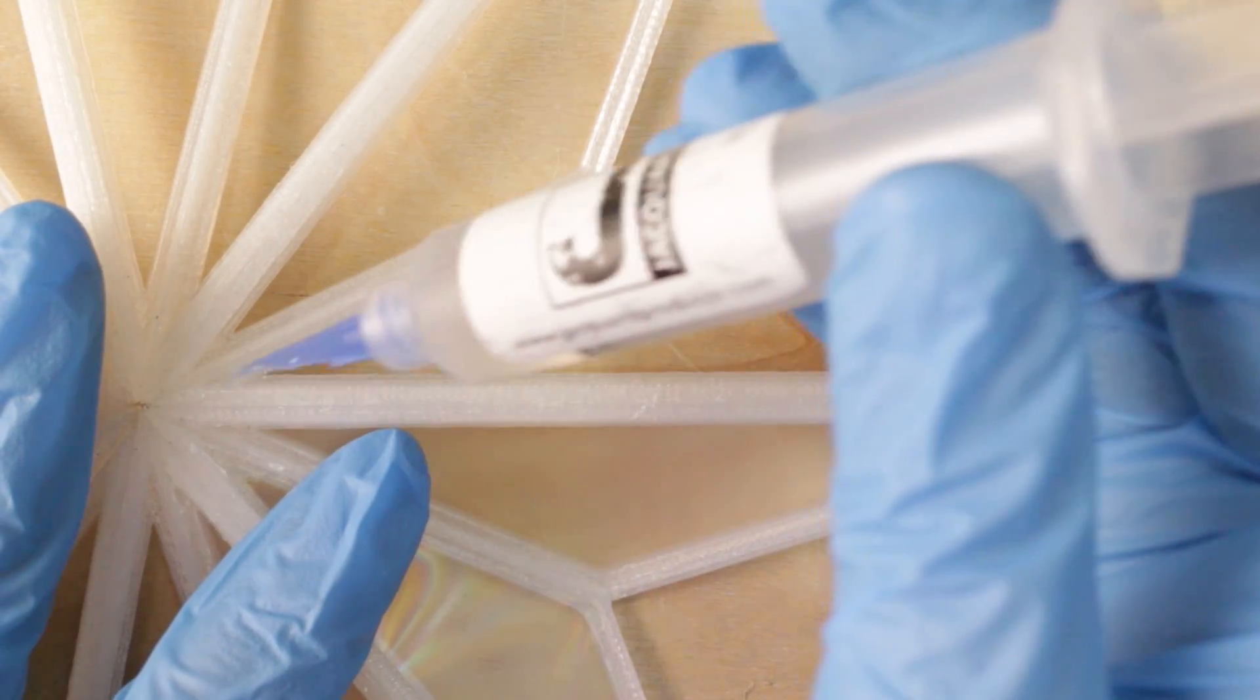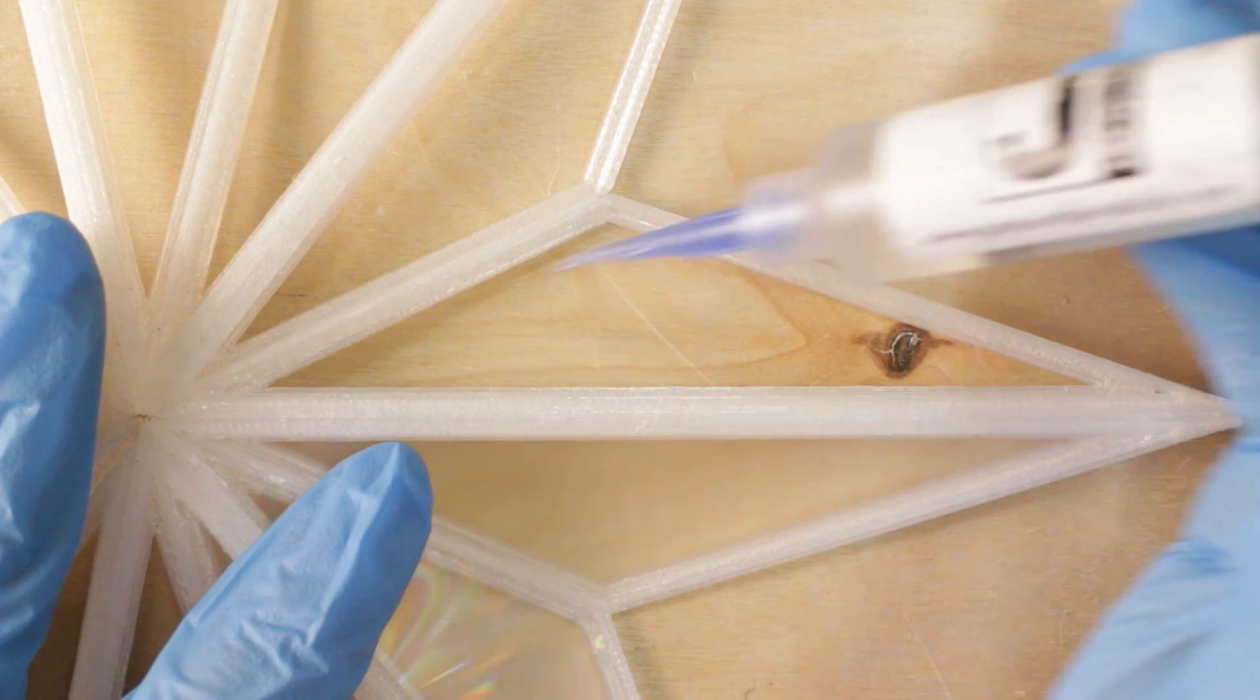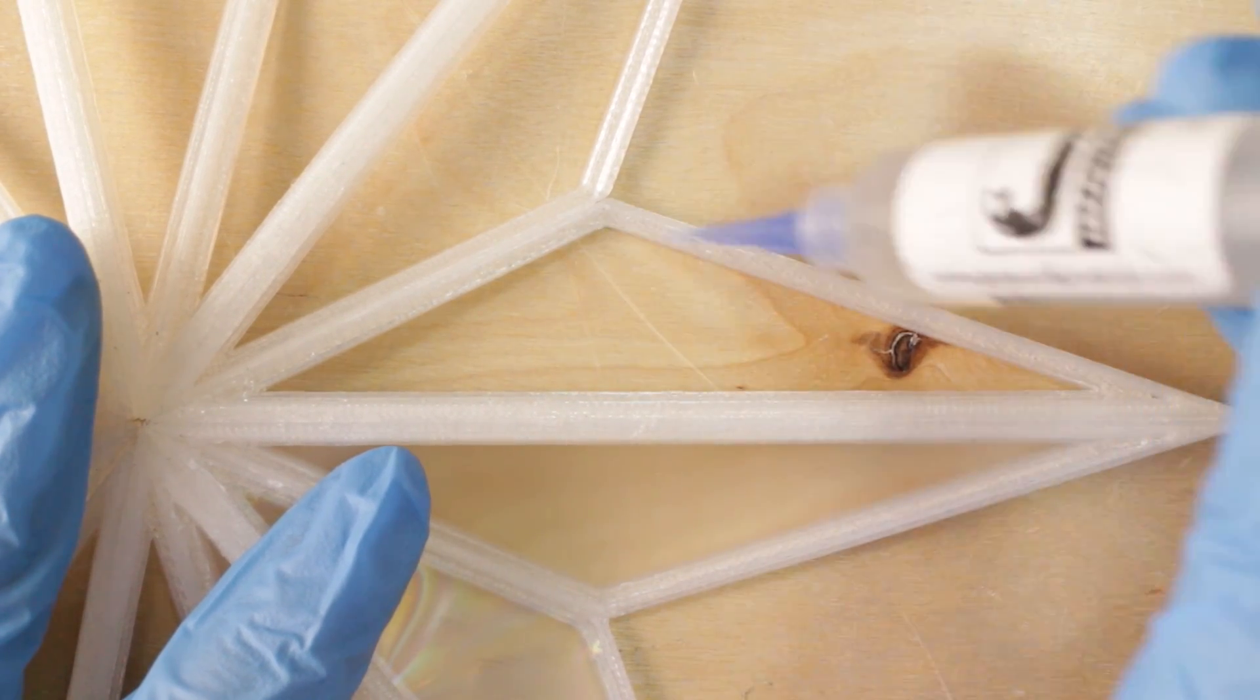Using tweezers, each triangle of film is peeled off the sticky cutting mat of the Curio and carefully glued into each offset edge of the Suncatcher's triangles.